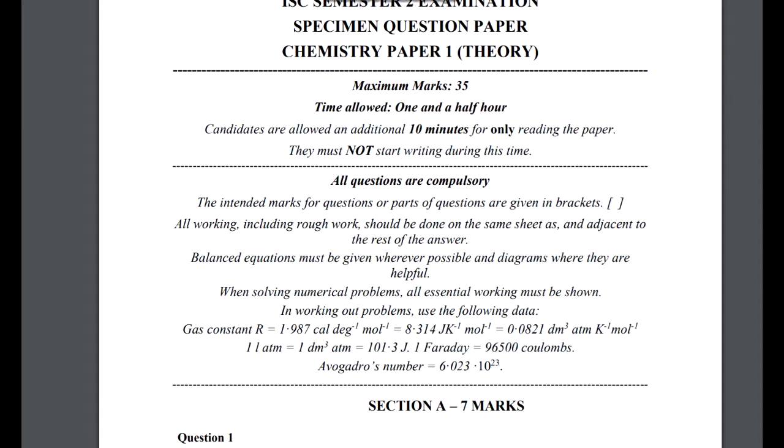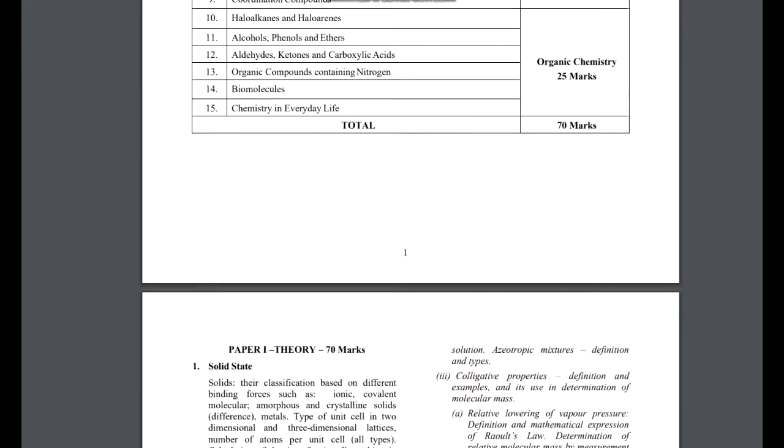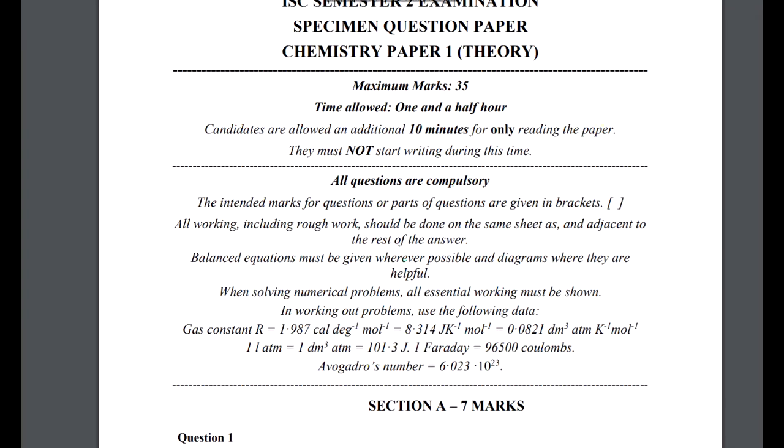Here I will discuss three things. First, a specimen question paper has been published. Second, the bifurcated syllabus showing which chapters remain. And third, in the remaining chapters, which portions we have and which we don't have. First, we'll go through the specimen question paper.